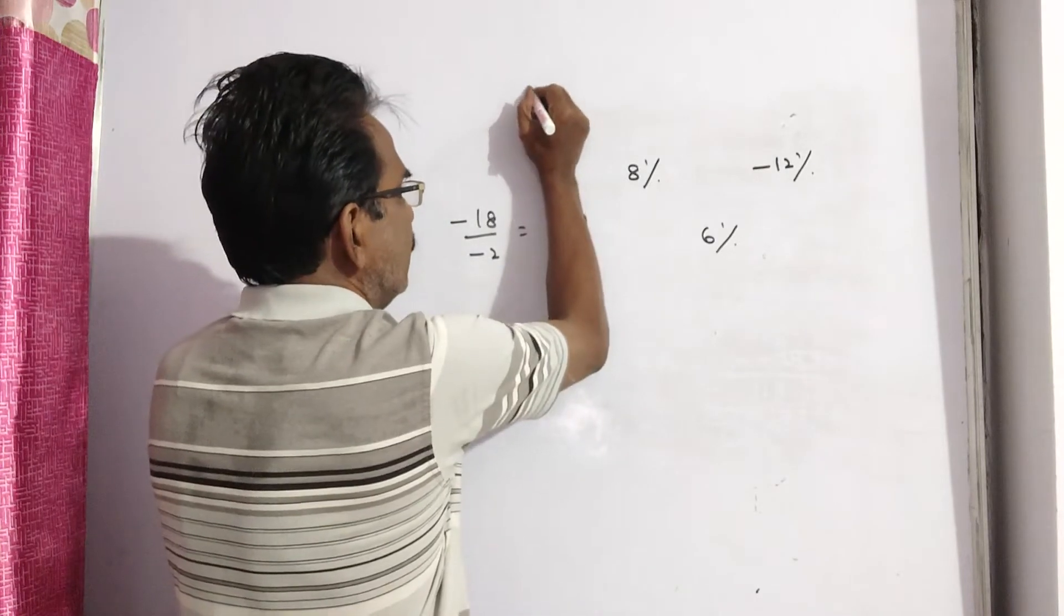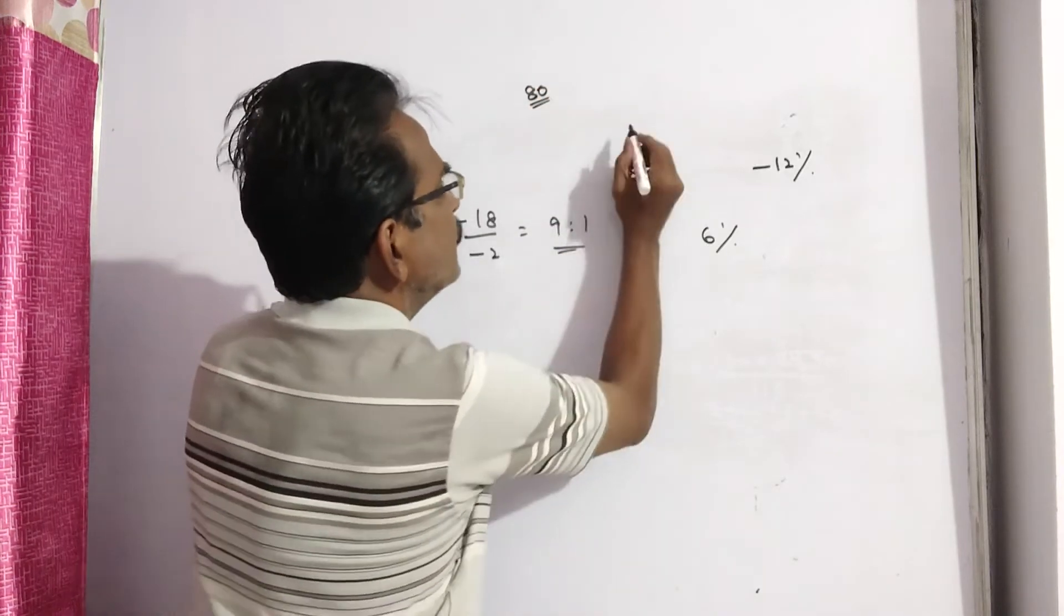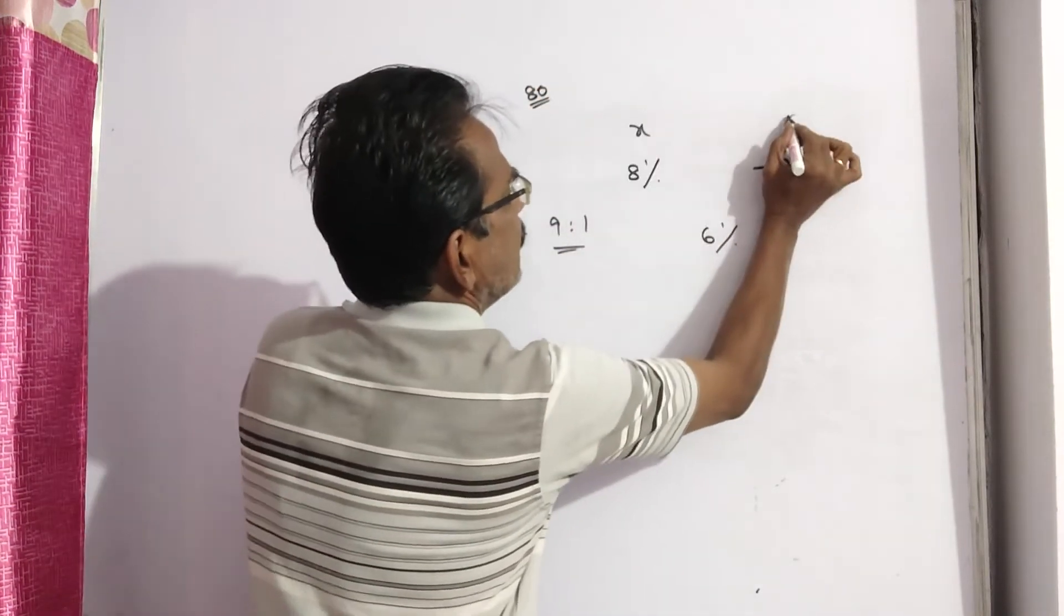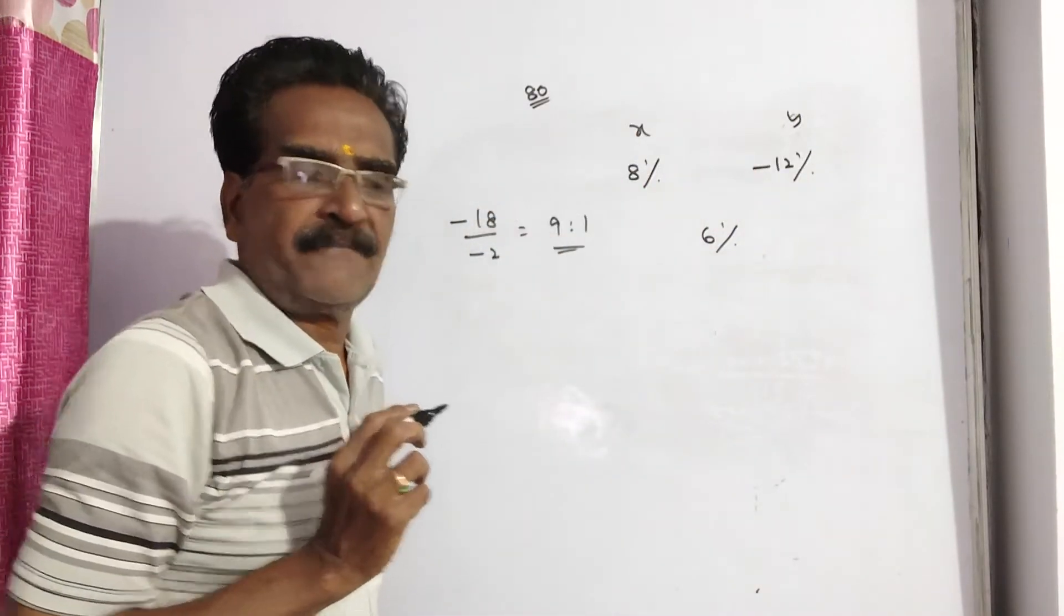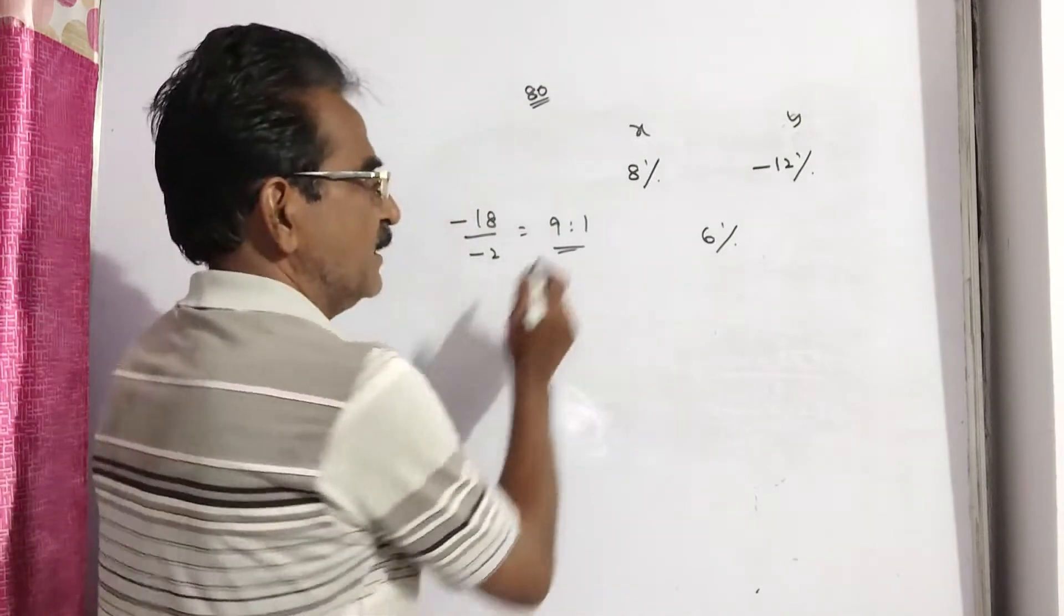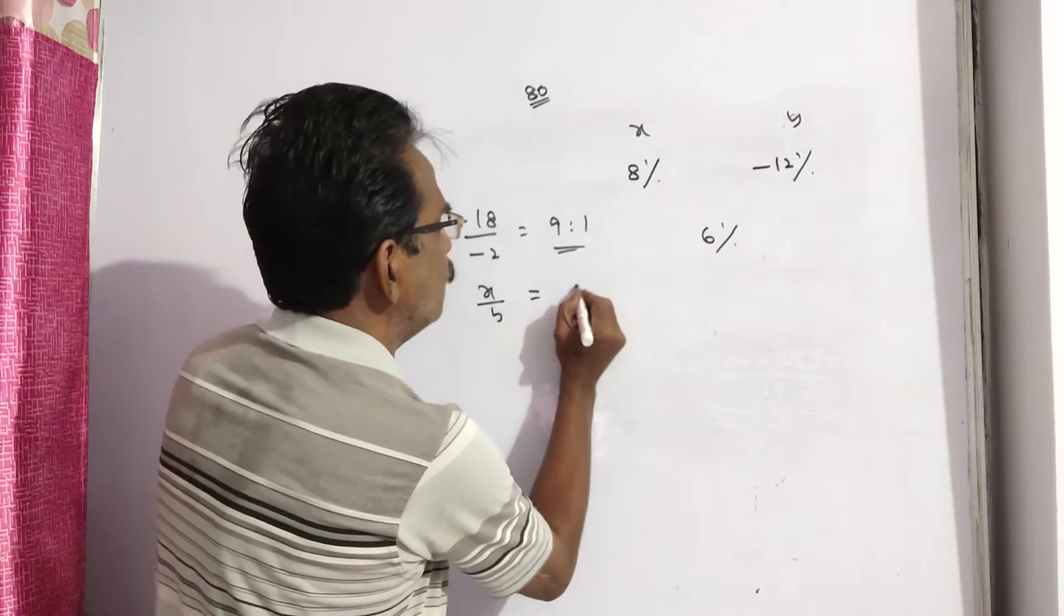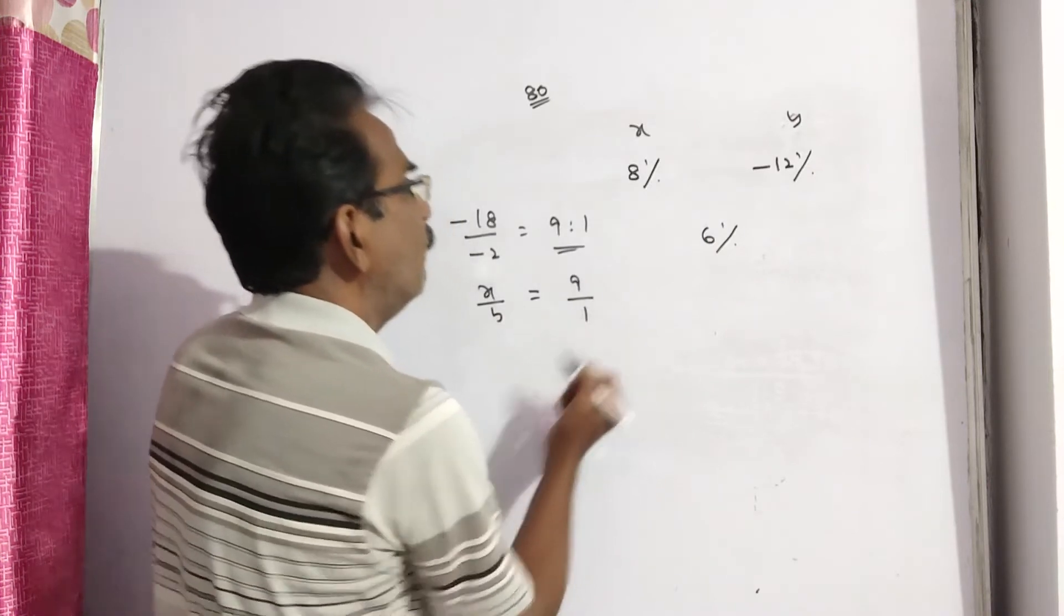Total articles, 80 articles. So say this is X. X articles are sold at 8% profit and Y articles are sold at 12% loss. Then we get X by Y, X by Y is equal to 9 by 1.